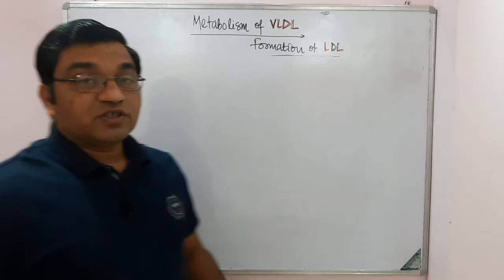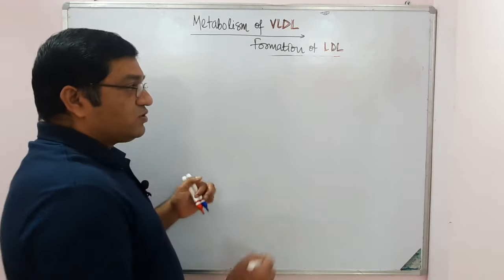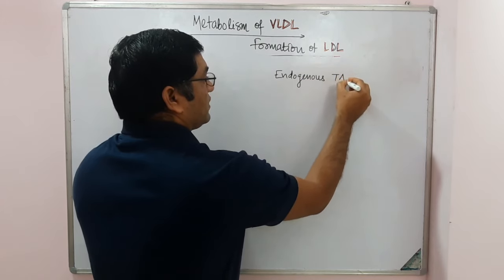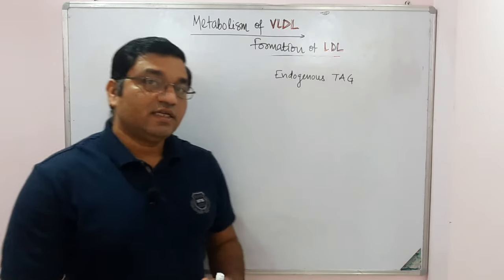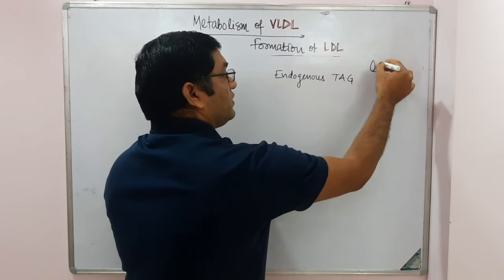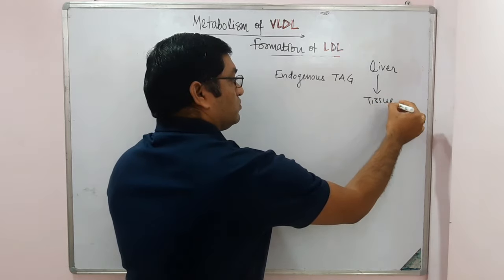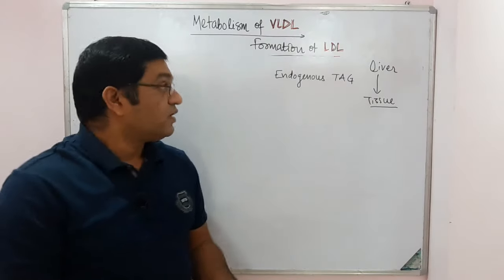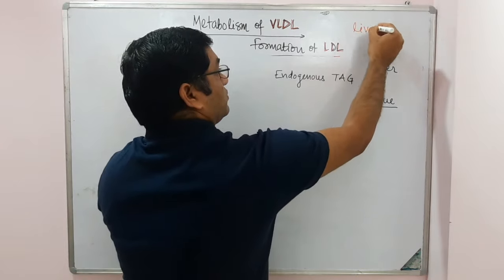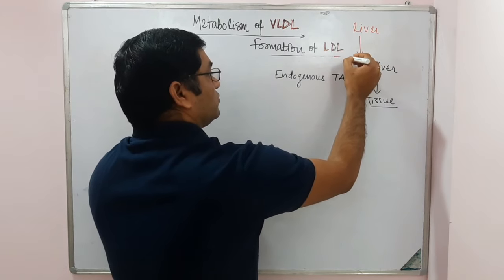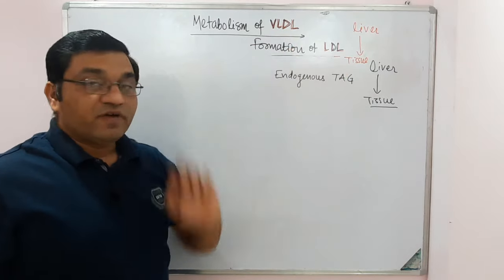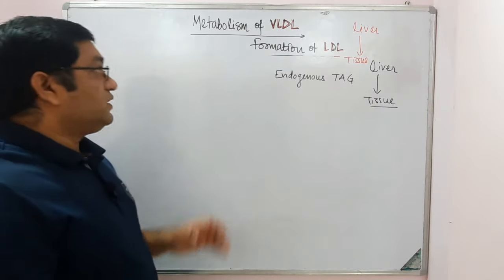VLDL is responsible for transport of endogenous triacylglycerol — that is, triacylglycerol synthesized in our body — from the liver to the peripheral tissues. LDL is responsible for transport of cholesterol from the liver to the extrahepatic tissues or peripheral tissues. LDL stands for low density lipoprotein and VLDL stands for very low density lipoprotein.